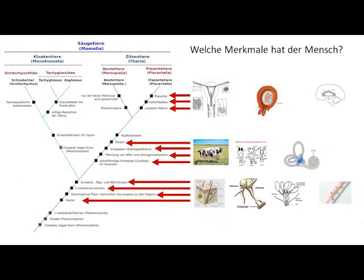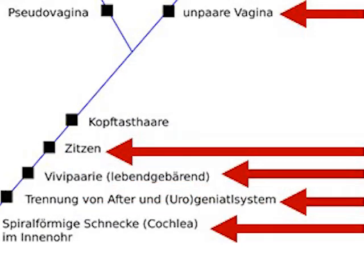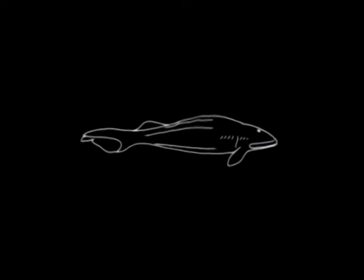Dem aufmerksamen Zuschauer wird aufgefallen sein, dass in diesem Kladogramm als Apomorphie aller Zitzentiere auch die Kopftasthaare — also die Schnurhaare, wie wir sie von Katzen kennen — genannt werden, die aber Menschen nicht haben. Im Verlauf der Evolution kann es vorkommen, dass ein gemeinsames Merkmal wieder verloren geht. Dieses Nichtvorhandensein eines Merkmals — in unserem Fall das Fehlen von Schnurhaaren — heißt nicht, dass wir dadurch keine Säugetiere sind, sondern dass sich weitere Spezialisierungen entwickelt haben, die durch die natürliche Selektion begünstigt worden sind. Das Rückbilden von Merkmalen ist ebenfalls ein Teil des Evolutionsgeschehens, weil diese zu neuen Anpassungen führen.